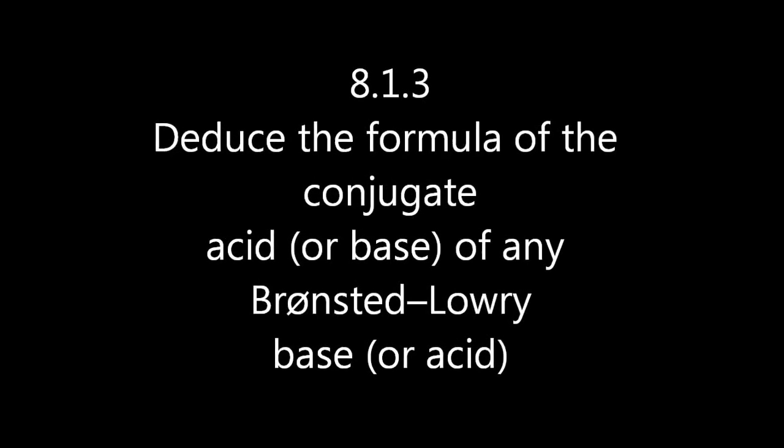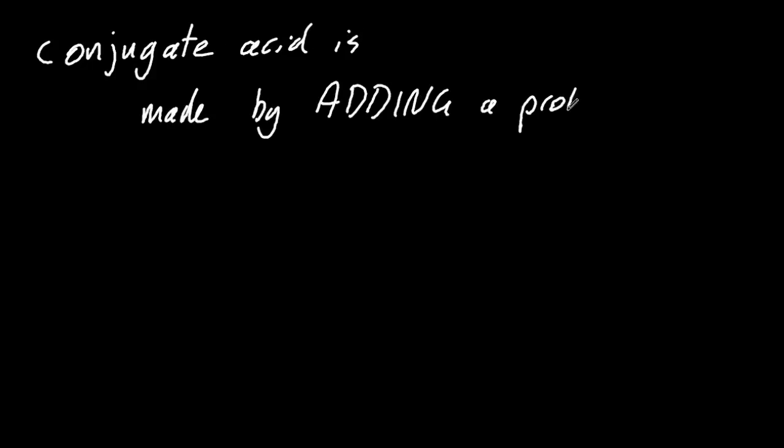So the secret to this is just to remember this one sentence and everything else will flow from it. A conjugate acid is made by adding a proton. That's how I remember it. A conjugate acid is made by adding a proton.